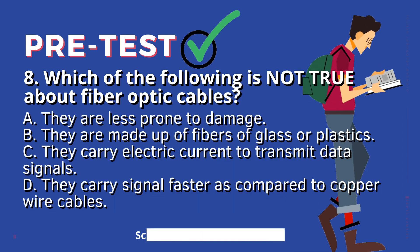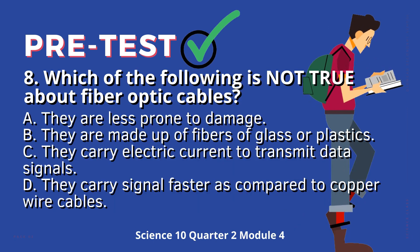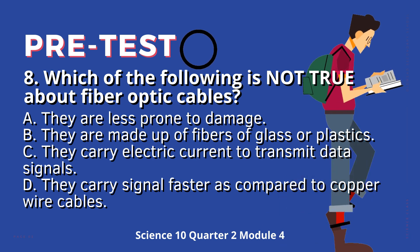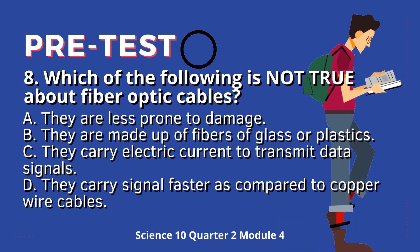Question 8: Which of the following is not true about fiber optic cables? A. They are less prone to damage. B. They are made up of fibers of glass or plastics. C. They carry electrical current to transmit data signals. D. They carry signals faster as compared to copper wire cables.